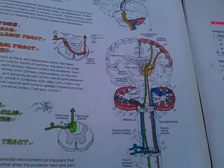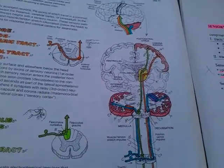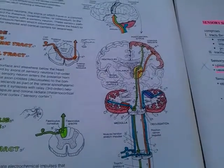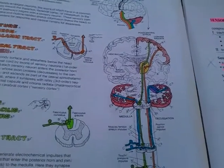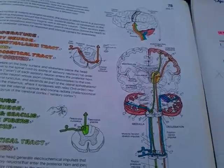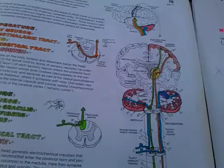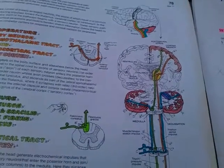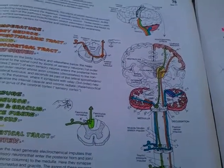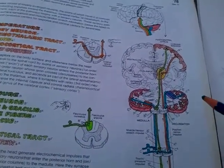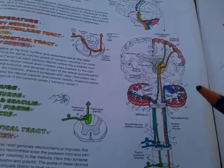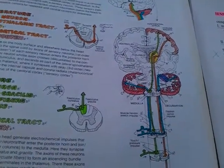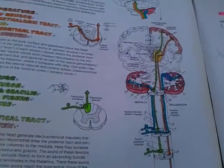Question 119: Chief nerve tracts of the sensory system. The sensory system is divided into two: tracts for general sensations, and tracts for the senses — the visual, auditory, olfactory, and gustatory pathways.